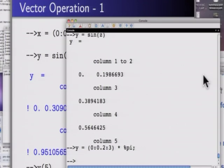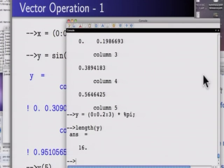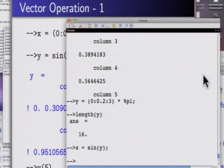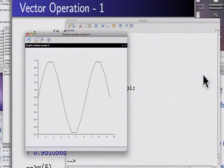16. Length of y is 16, because you have an extra end point, you have to add that, 15 plus 1 is 16. I can say z equals sin of y and then I can say things like plot2d of y, z. If I have more points, you will get a smooth curve. So you can do all these calculations.